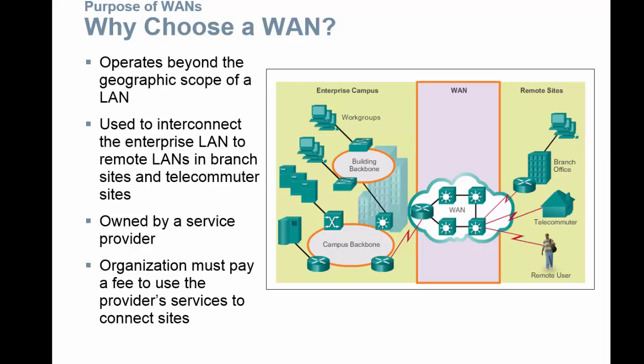With our WAN technologies, you may ask why choose a WAN? Well, it operates beyond the geographic scope of the LAN. Remember, LAN is our local area network and WAN is our wide area network, so we need to be able to network our devices across a large span of space. It's used to interconnect the enterprise LAN to remote LANs, branch sites, and telecommuter sites. It's owned by a service provider such as AT&T, Time Warner, or RST, and the organization must pay a fee to use the provider services to connect sites.